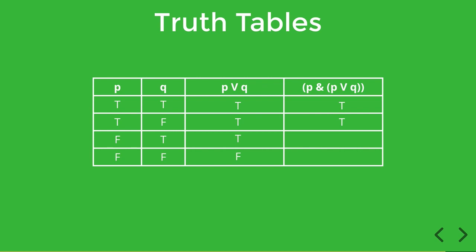In row three, we have false in column one and true in column three. So that's false and true. So the conjunction is false since the first conjunct is false.